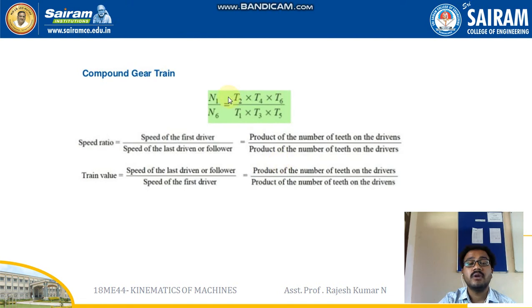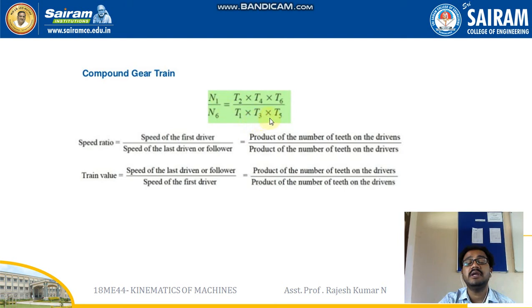The train value is the reciprocal of the speed ratio. So N6/N1 = (T1 × T3 × T5) / (T2 × T4 × T6).